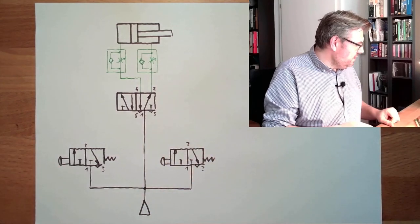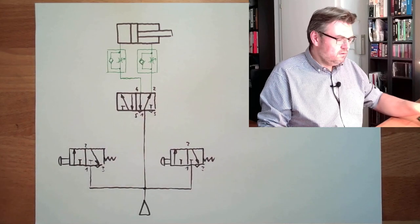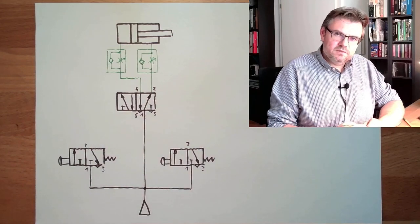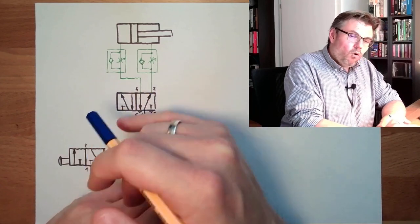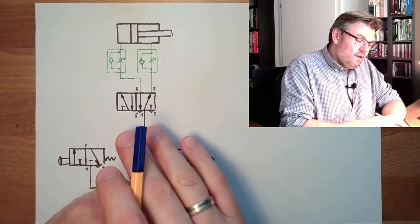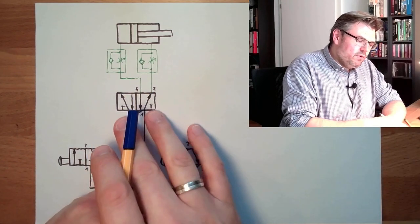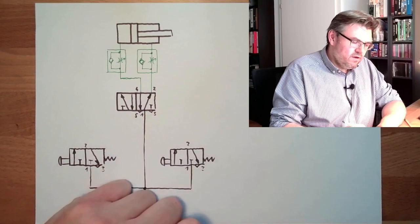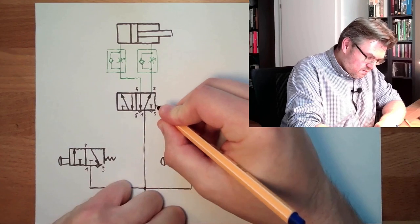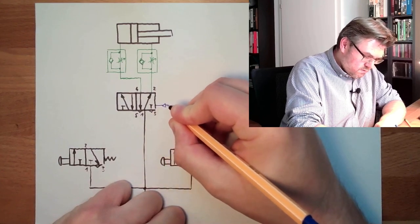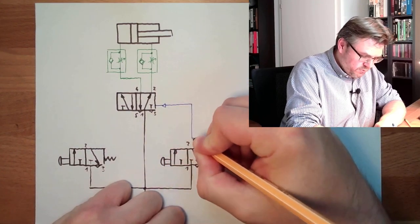And now this here, this needs to be a special valve. This needs to be an impulse valve. This means when there is a short impulse on one side, and this goes away, it will simply switch and stay there. So both sides here, they are pneumatically switched.